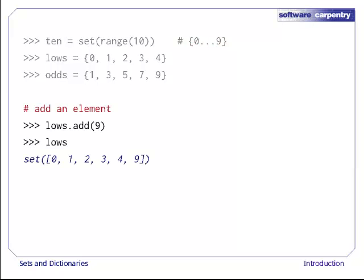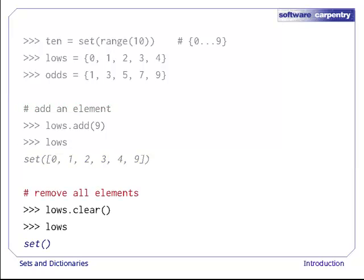We've already seen how to add elements using set's add method. We can also empty out a set by calling its clear method. Just like the methods of strings and lists, we call a method using object.methodName instead of a naked function name.